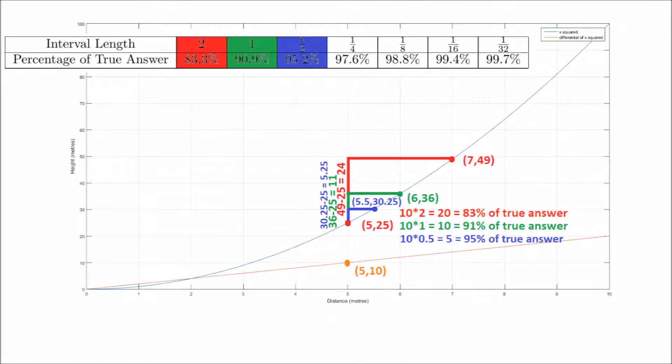So let's compare the percentage difference between the actual answer and our gradient multiplied by the interval length for different interval lengths, about the point x equals 5, as shown here. So we can see that as the interval gets smaller, our answer gets closer to the true answer.